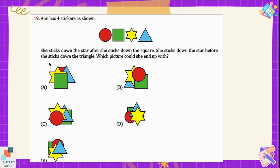She sticks down the star before she sticks down the triangle, meaning the triangle will be pasted on top of the star. We cannot consider options C and D because in those two options the triangle is behind the star. Only option E is correct — she sticked the square first, then the circle, then the star, and at the end the triangle. Option E is the correct option.